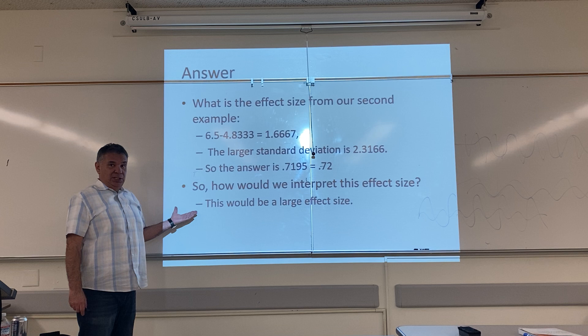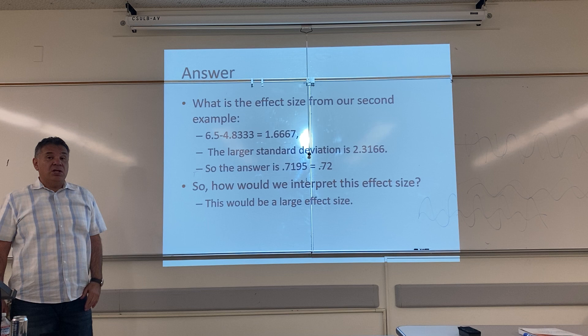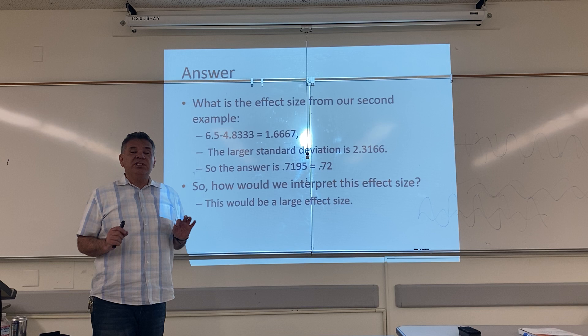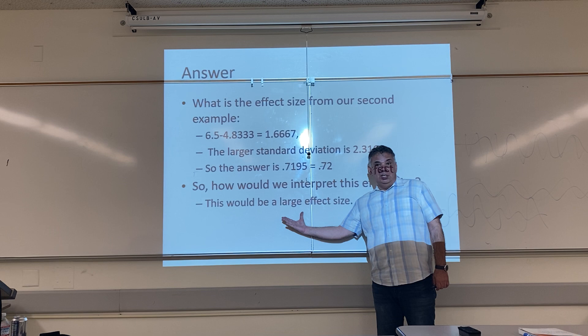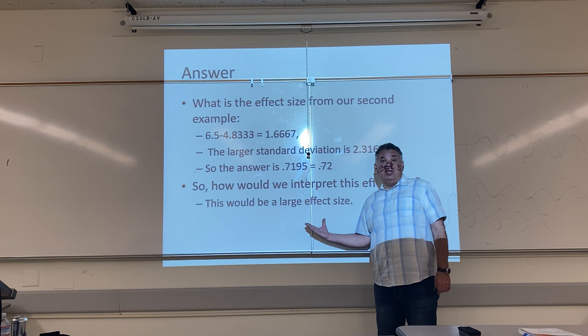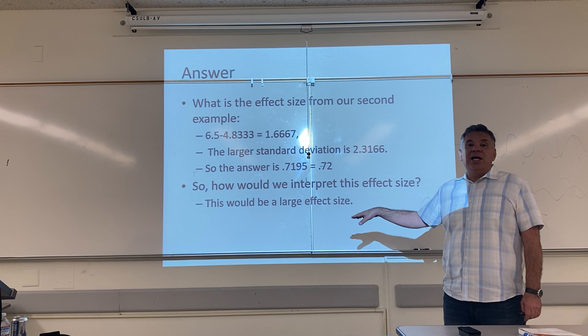How would we interpret this? Using our table from the previous slide, this answer is 0.5 or bigger, so this would be considered a large effect size. That's really interesting — the significance test told us that the results were non-significant, that the differences weren't really real. But the effect size tells us there's a large difference between these two groups, yet the difference is non-significant. It's possible to find a large difference that is non-significant, especially when you're working with a small sample size.